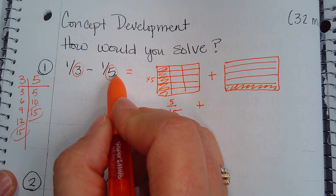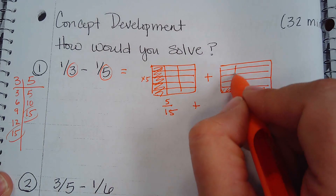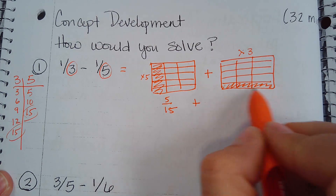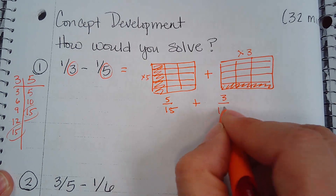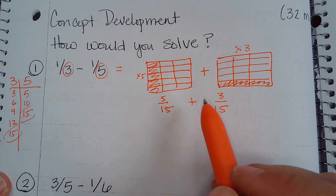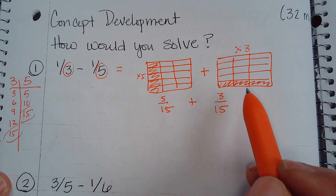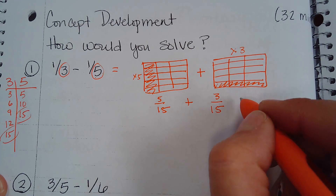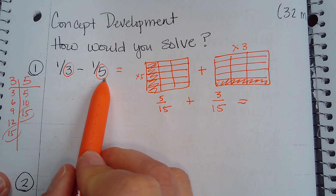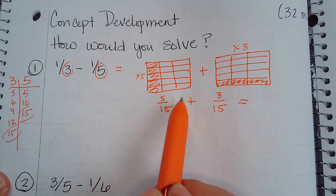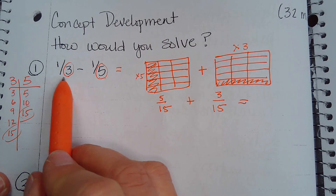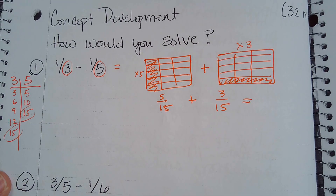Plus one-fifth: I multiply by three, dividing it into thirds, so I now have three-fifteenths. The big idea of using these rectangular fraction models is to see that these are truly equivalent fractions — you're taking two fractions that don't have like units and creating equivalents that are still equal. One-third is still equal to five-fifteenths.